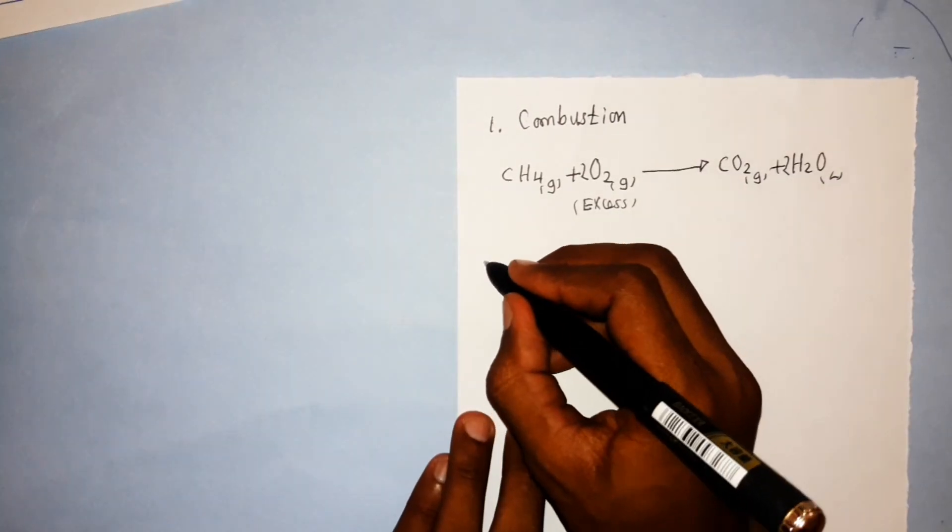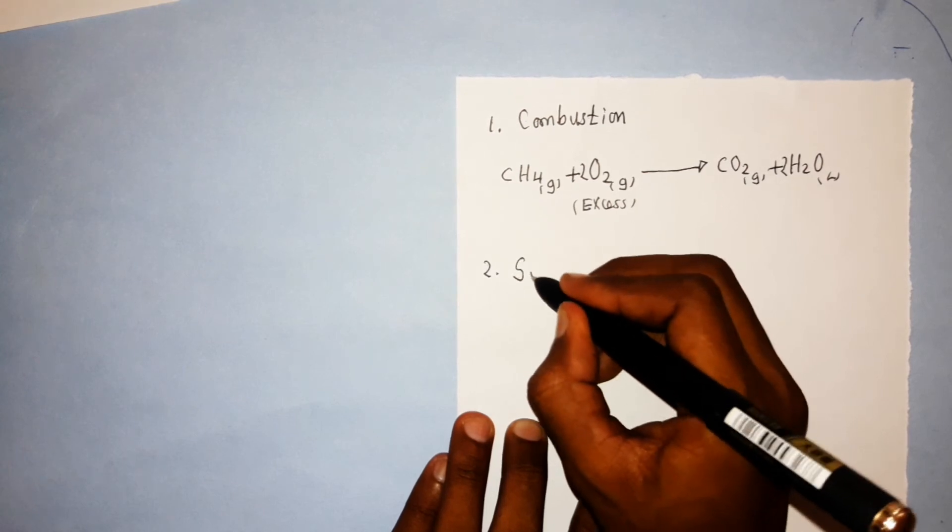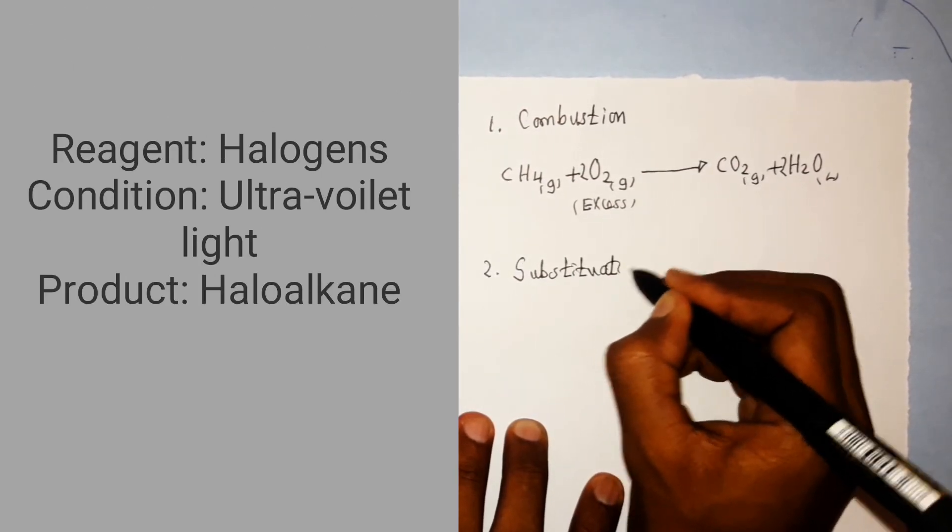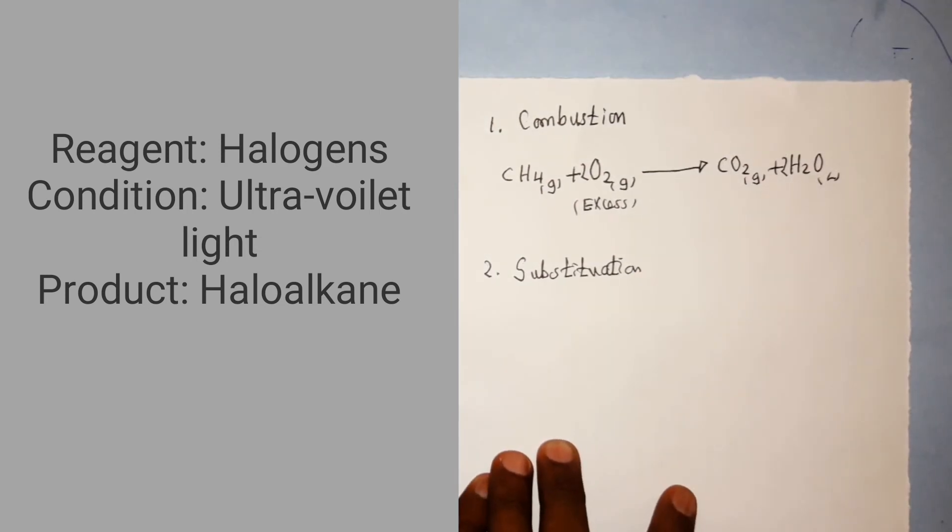The next reaction is substitution. The reagent used is halogens. Condition is UV light. The product is haloalkane.